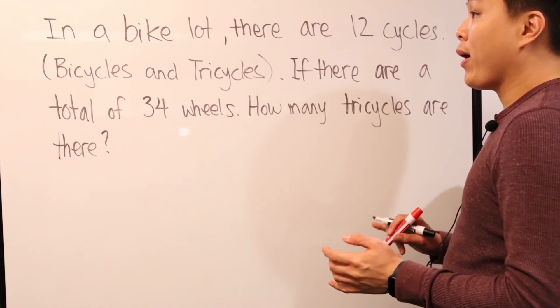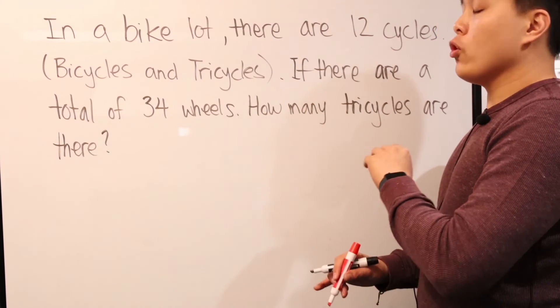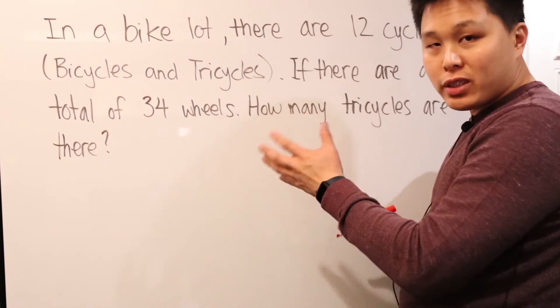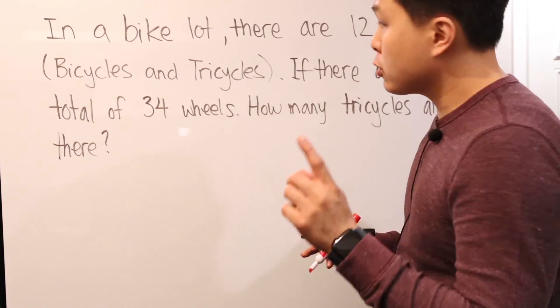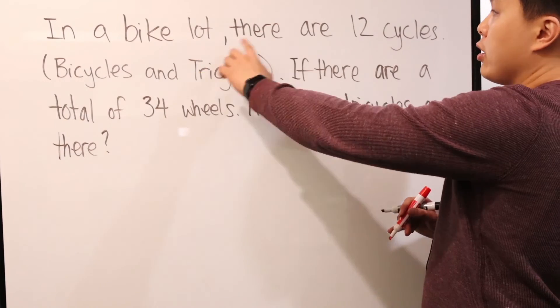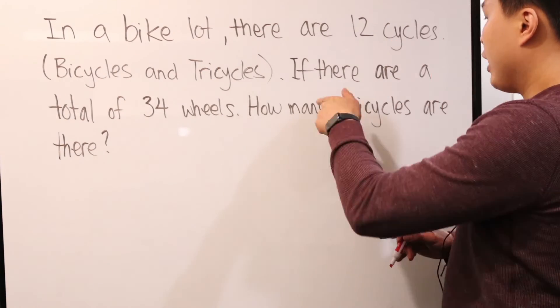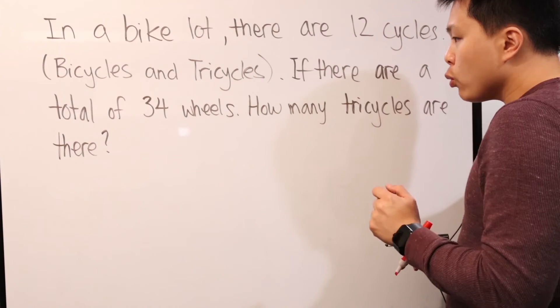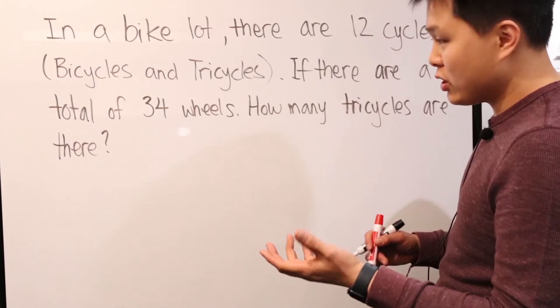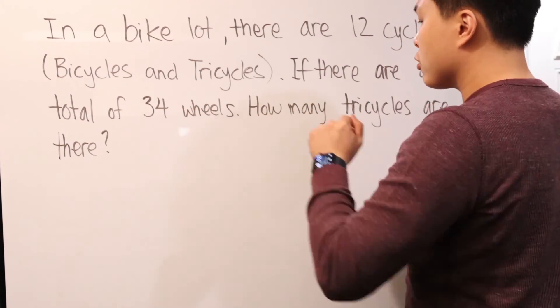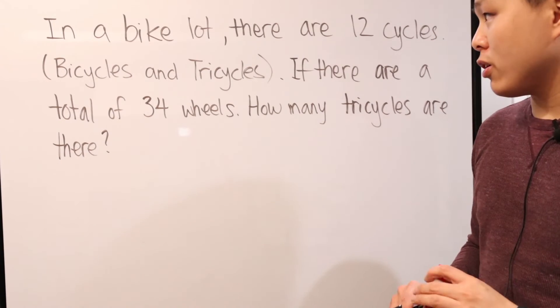All right, let's look at one more. Now, this one, even though the wording and everything is just completely different, the structure itself is actually very similar to the first problem. In a bike lot, there are 12 cycles. That includes bicycles and tricycles. If there are a total of 34 wheels, just basically wheels in general, I don't know why anyone cares, but if there are a total of 34 wheels, how many tricycles are there?